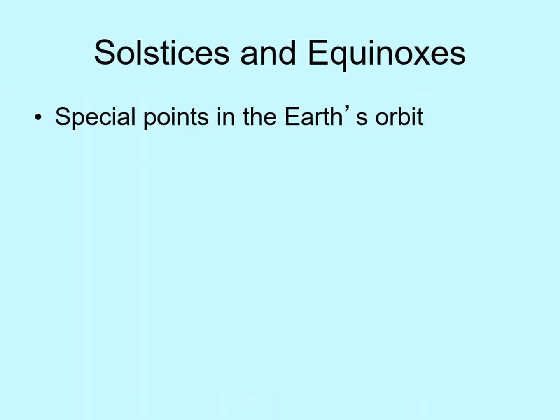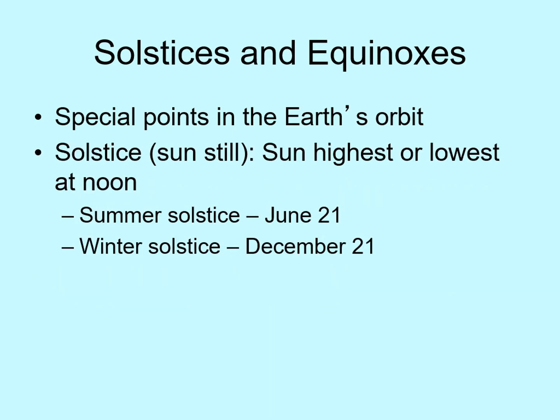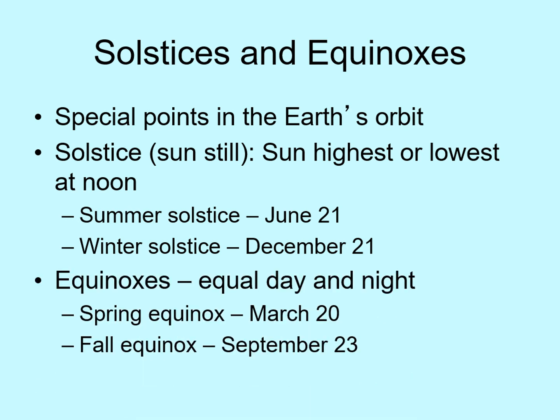There are a few special points in the year that relate to the seasons. First off, we have the solstices. Solstice literally means "sun still." These are the points of the year when the Sun reaches its highest or lowest point in the sky at noon. They mark the beginning of summer or winter. Note that the names have a northern hemisphere bias, so the summer solstice is in June when the northern hemisphere starts summer — the south is starting winter at that time. The equinoxes happen when we get equal amounts of day and night. This happens halfway between the solstices. The Sun rises due east and sets due west on these days. They mark the beginning of spring and fall.